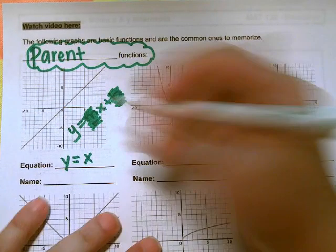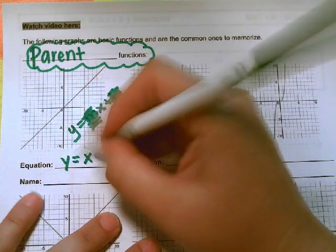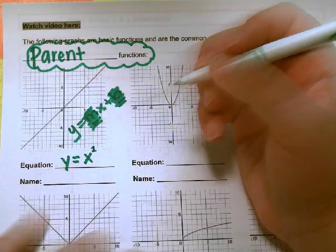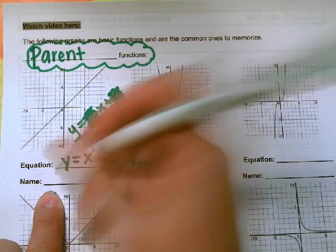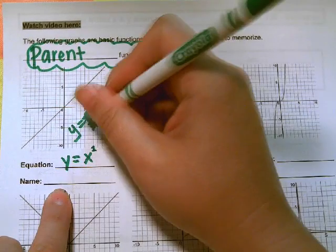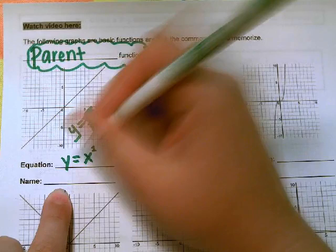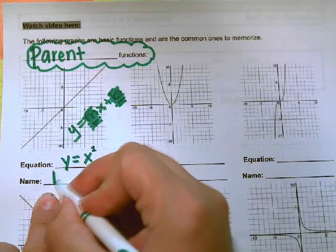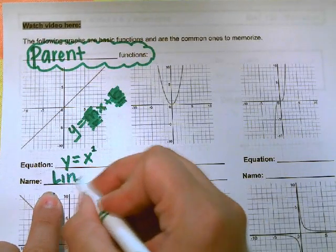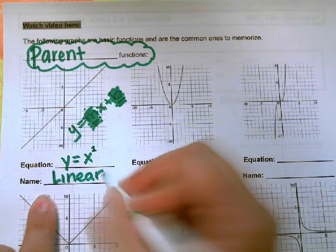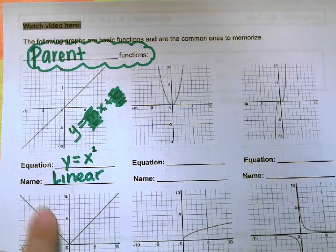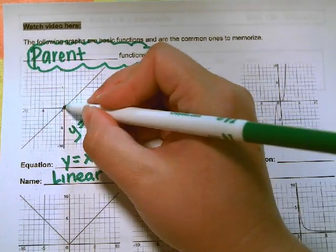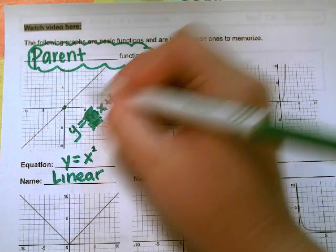Any time you have an equation where the highest exponent is 1, and it's in the form y equals mx plus b, but it might not have those two numbers, it is linear. You know it's going to make a line. Notice it goes through the origin, and it's a straight line.